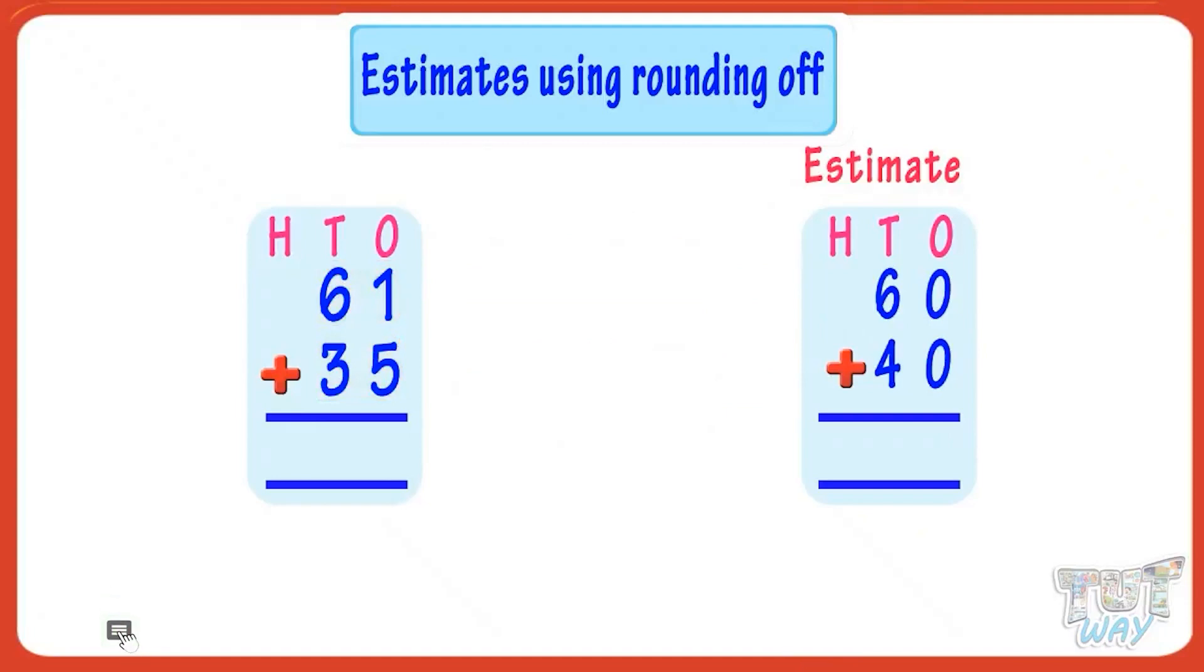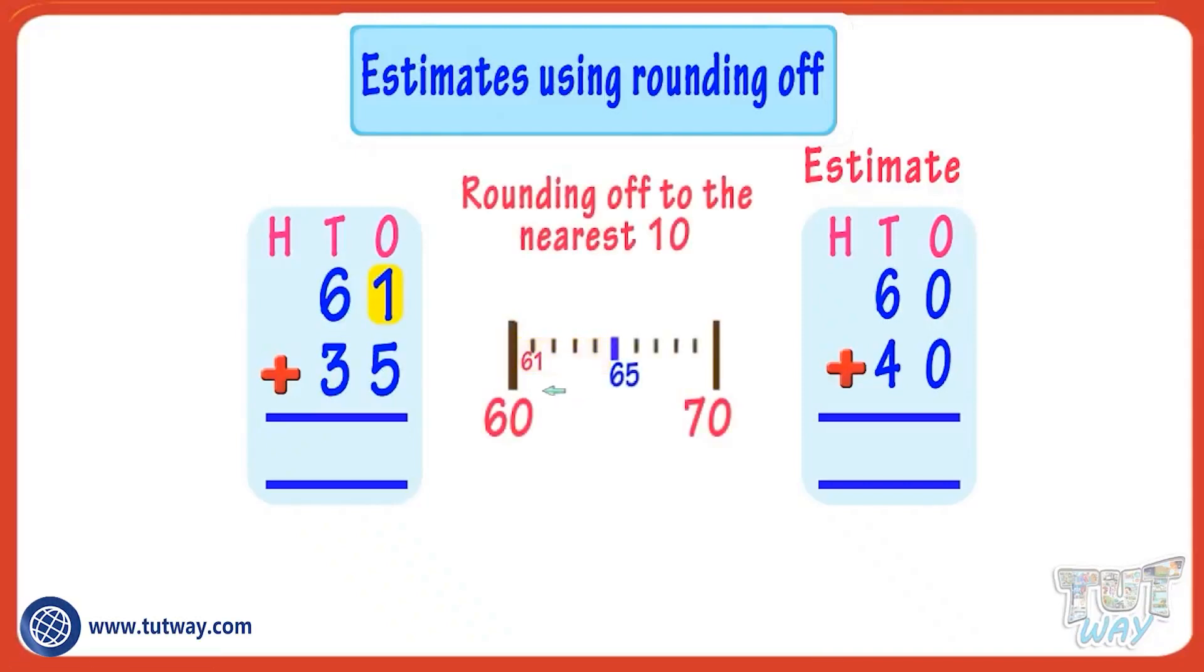For rounding off numbers to the nearest 10, we see the ones digit. If it's less than 5, we round the number down to the previous 10, that is 60 in this case. And if the ones place digit is 5 or more, we round the number up to the next 10, that is 70 in this case.